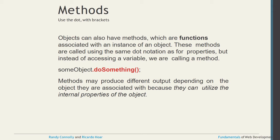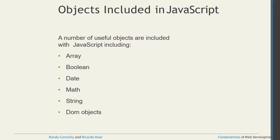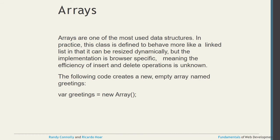The objects included in JavaScript are: Array, Boolean, Date, Math, String, and DOM objects — these are the most popular built-in objects available in JavaScript. First, let's talk about Array. Arrays are one of the most used data structures in practice. This class behaves more like a linked list in that its size can be decided dynamically, but the implementation is browser-specific, meaning the efficiency of insert and delete operations is unknown.